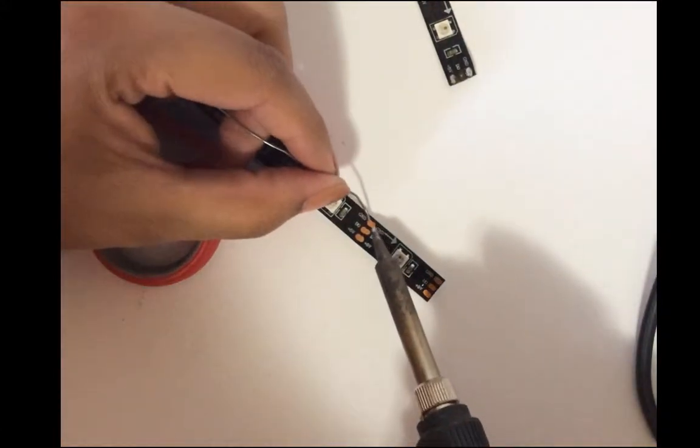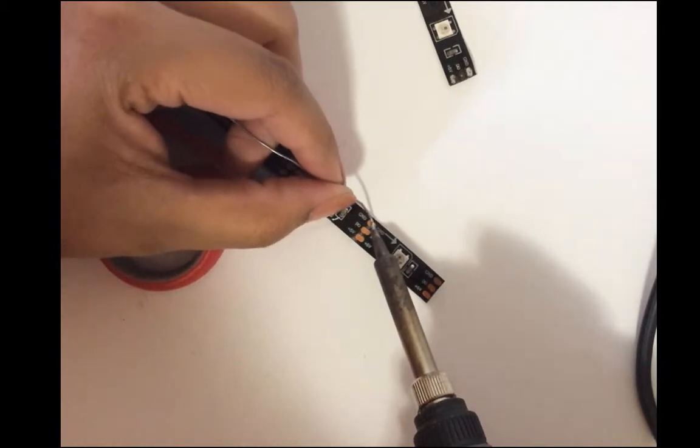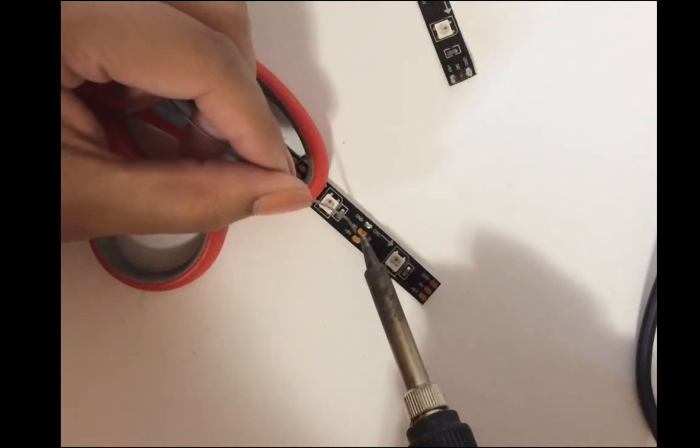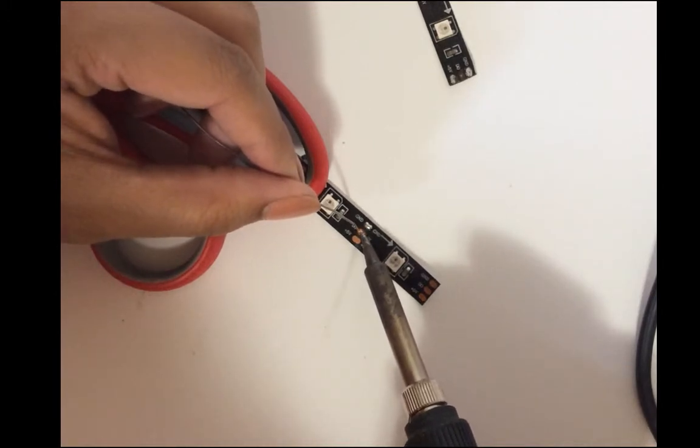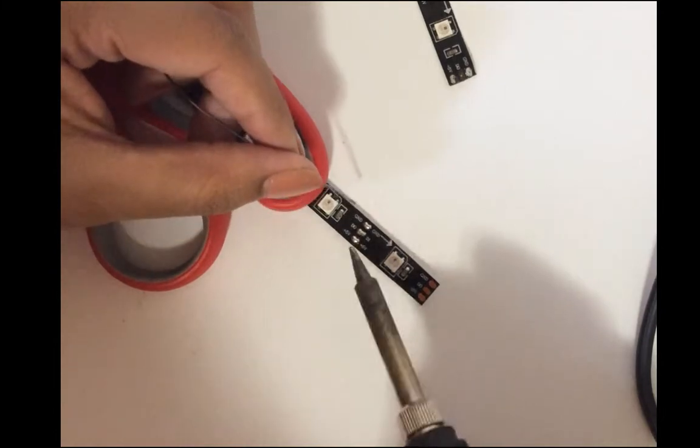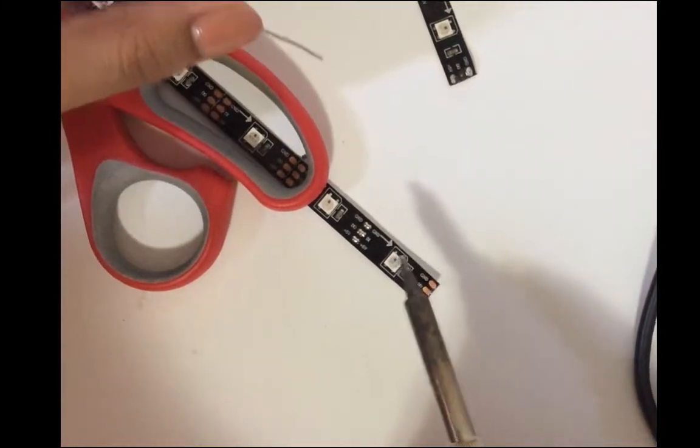Be a little bit gentle with leaving the soldering gun too long on the strip. You want to do it as quickly and as efficiently as possible because you could possibly burn out the pixel from the heat.